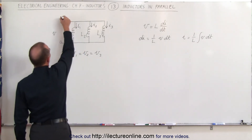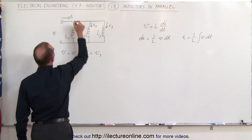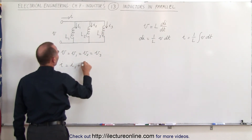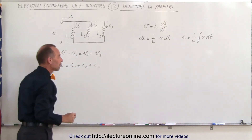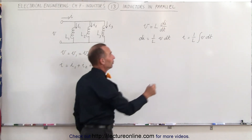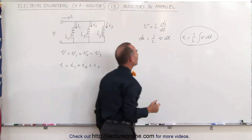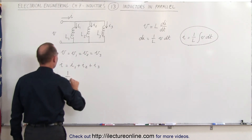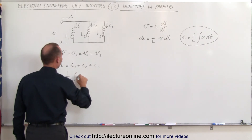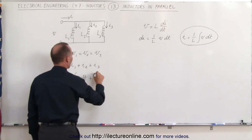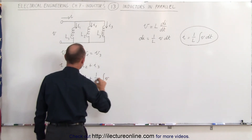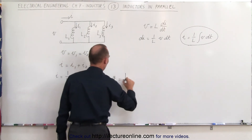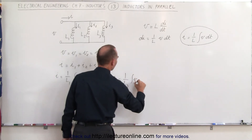And the total current through the circuit I must be equal to the sum of the three currents, which means I is equal to I1 plus I2 plus I3. Now we have an equation for the current through each of the three branches, which means the total current is equal to 1 over L1 times the integral of V dt, plus 1 over L2 times the integral of V dt, plus 1 over L3 times the integral of V3 dt.